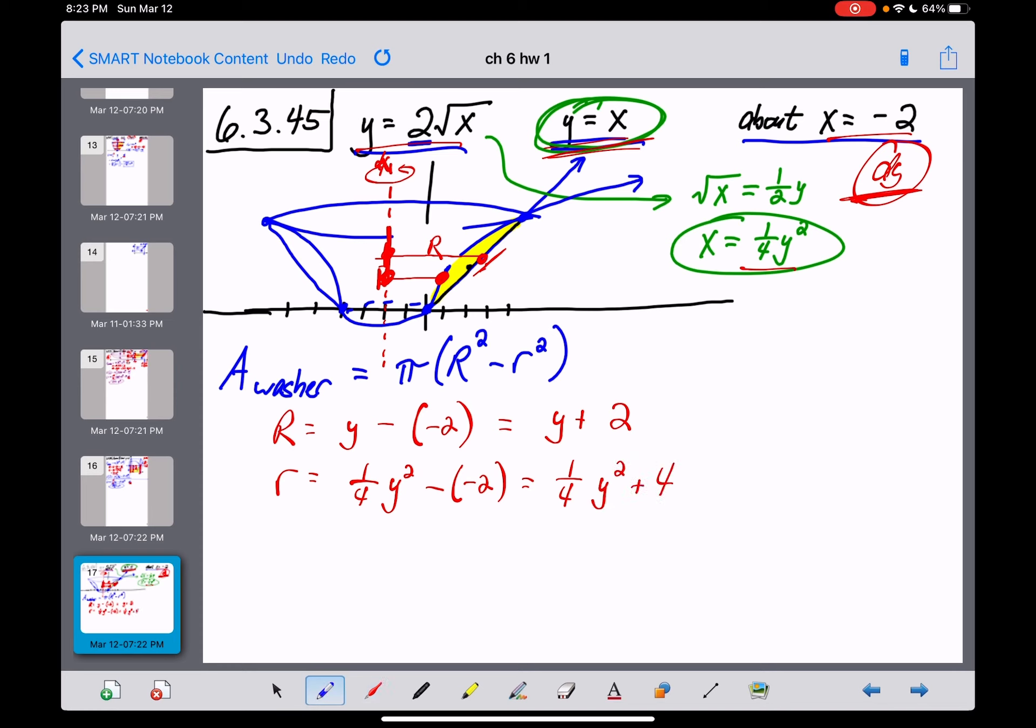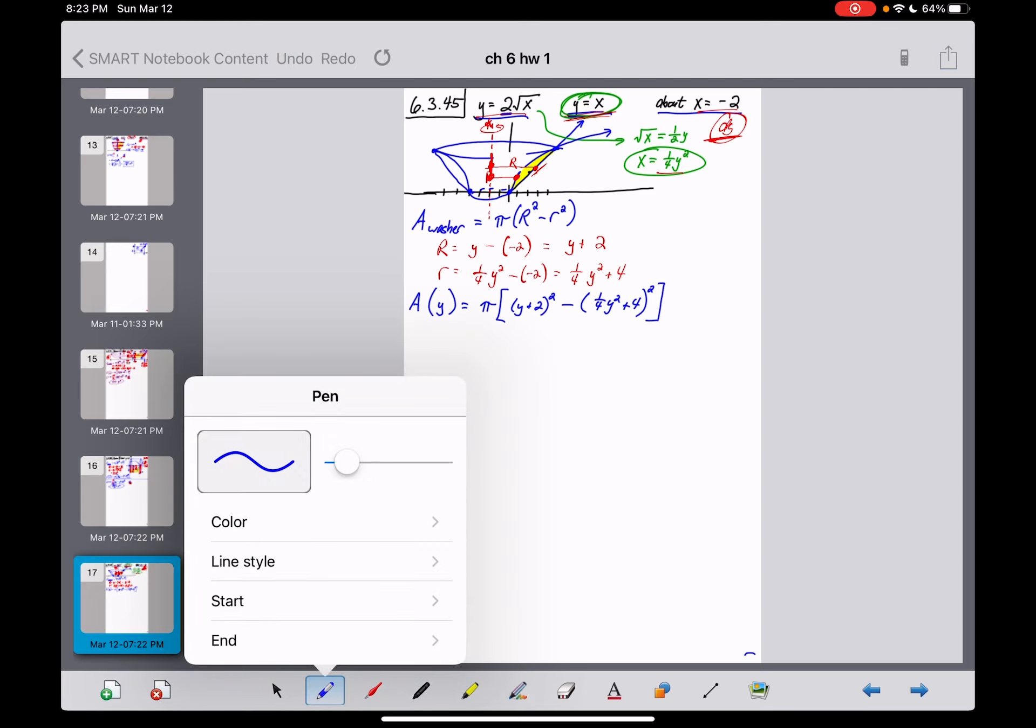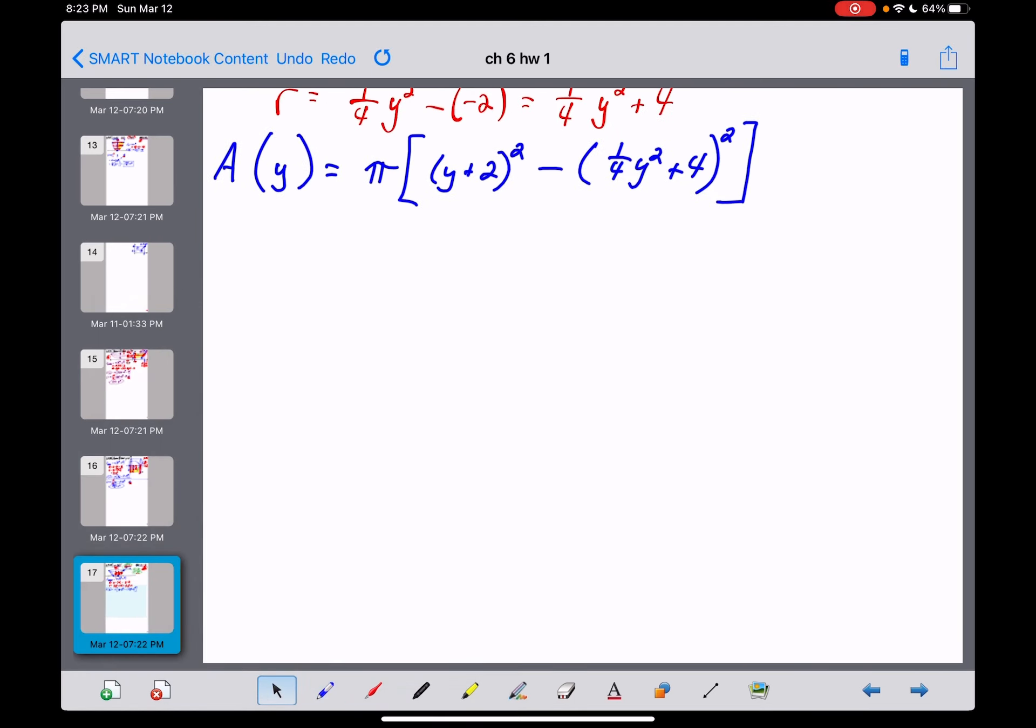So area now, we can express as a function of y, and that's going to be pi times, big R squared, so that's y plus 2 quantity squared, minus little r squared, which is one-quarter y squared plus 2 squared. And guys, that is a mess right there. I am not going to bother trying to simplify that expression in any way, shape, or form. We're going to leave it like that and let the calculator do all the hard work for us.